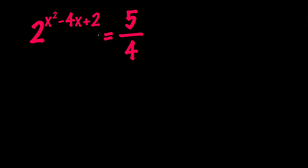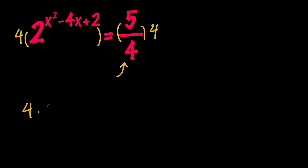First of all, let's go ahead and multiply both sides by 4 to get rid of this 4 in the denominator on the right-hand side. So we're going to have 4 times 2 to the power of x squared minus 4x plus 2 equals 5.